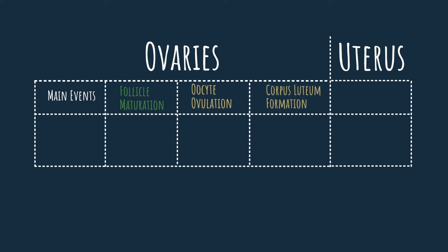During the uterine cycle we see one main event: the growth of the uterus as it prepares for embryo implantation. Obviously there are a lot more details and stages we need to go through before we can understand exactly how all this happens. But for now let's keep it simple and introduce the five main hormones of the menstrual cycle.